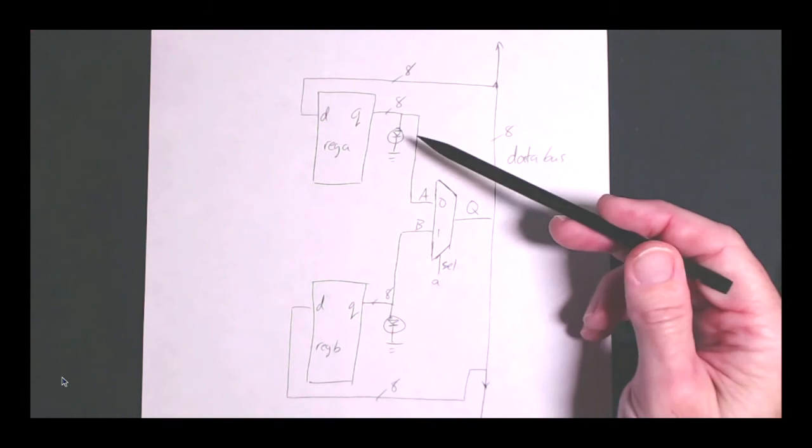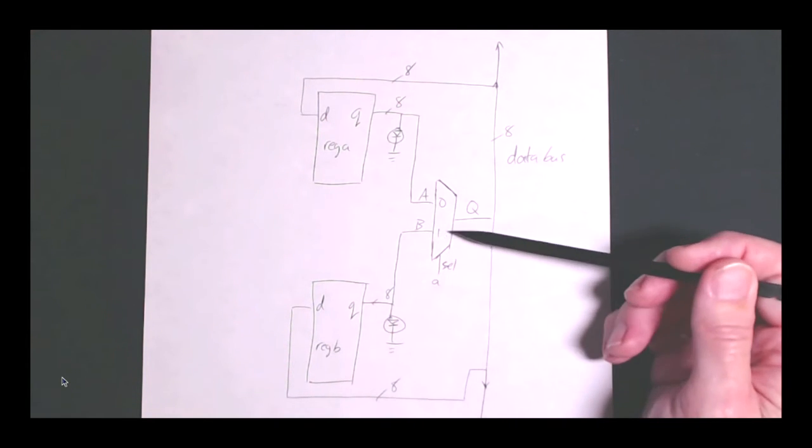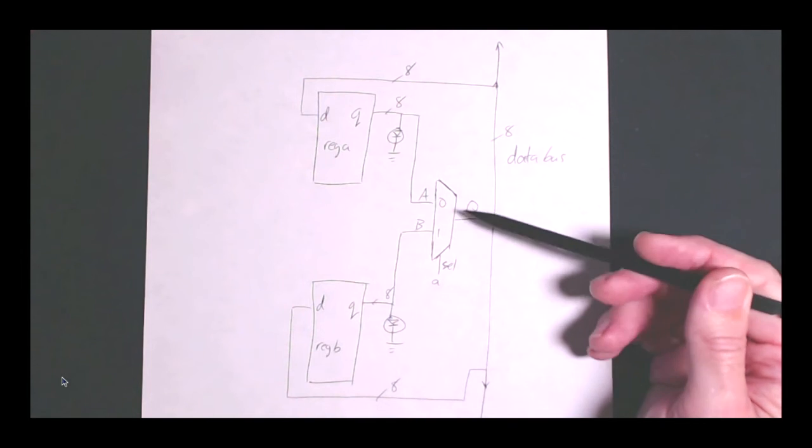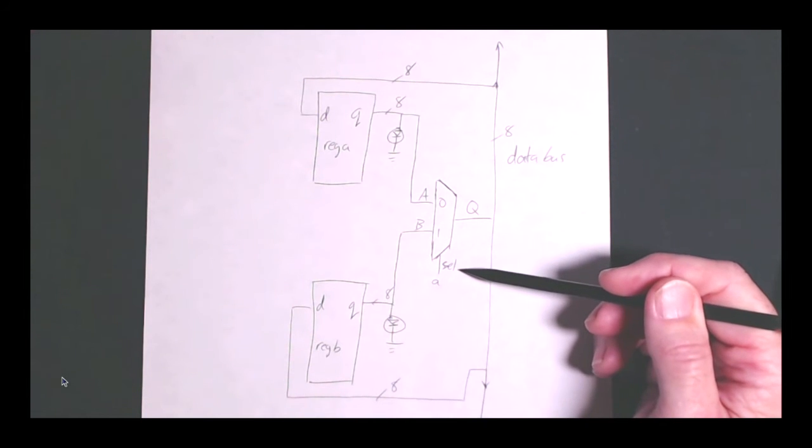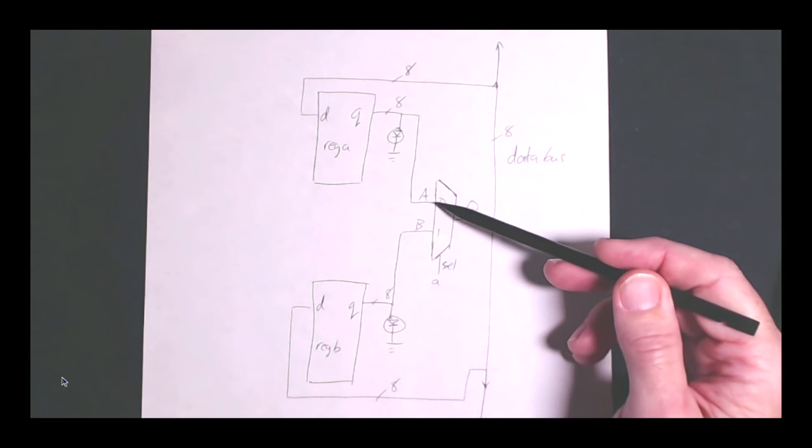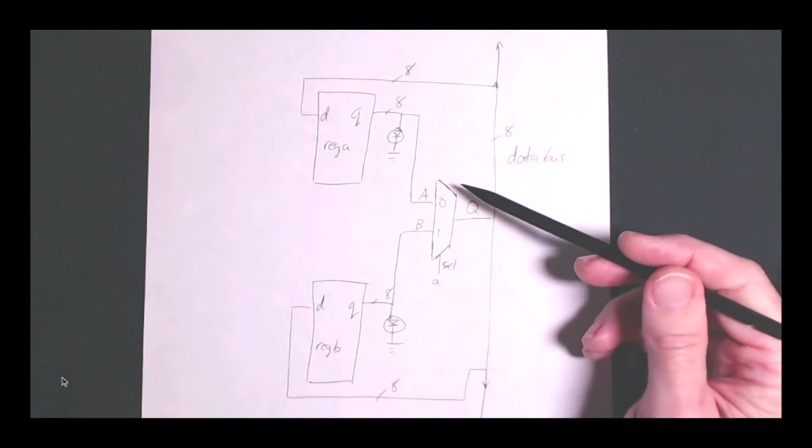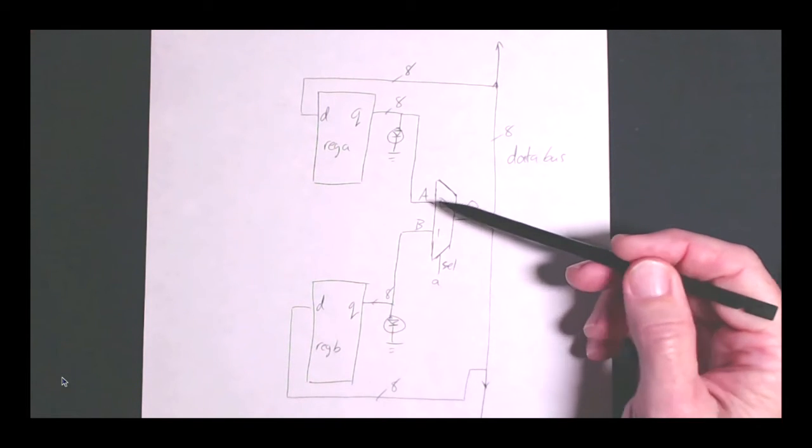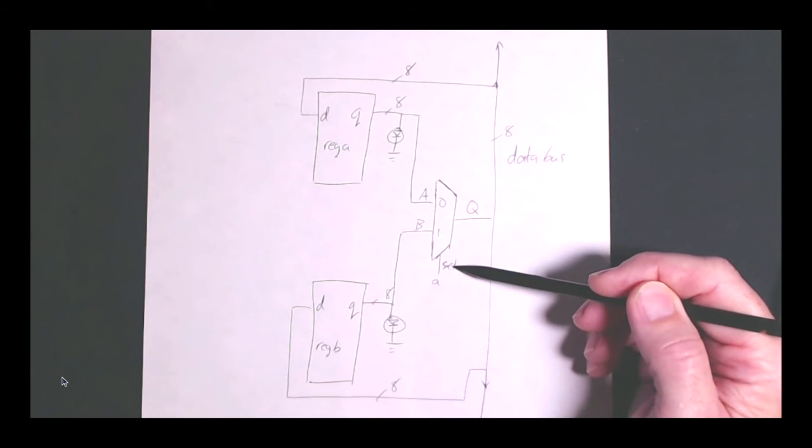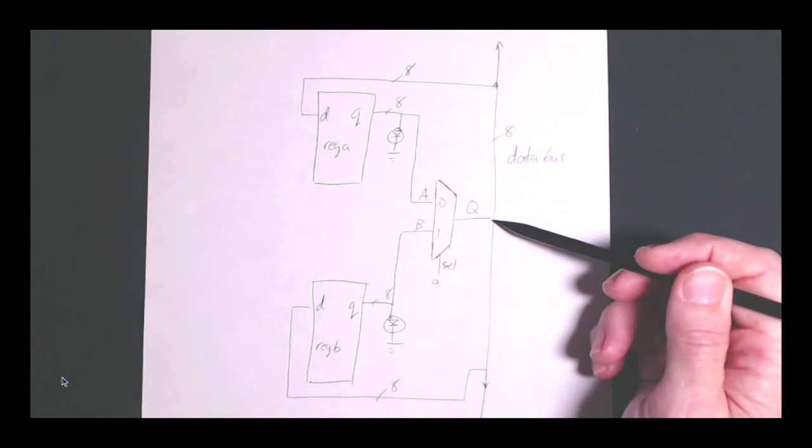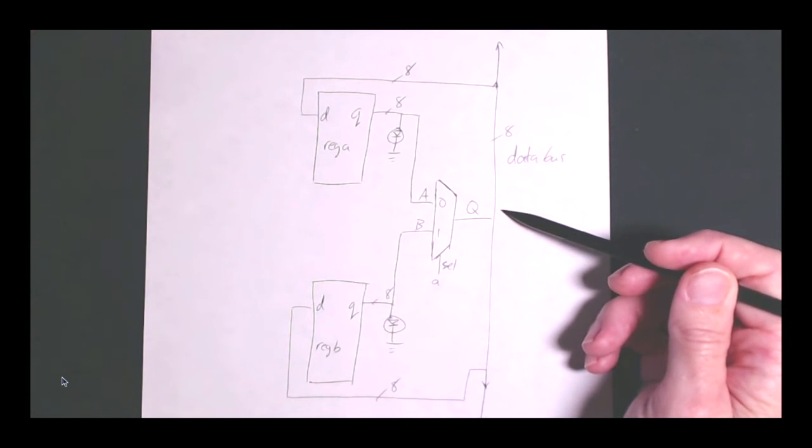And the way this works, you've got the output of each one of your registers going to an input of the multiplexer, and then you have a select line that tells the multiplexer which output to put through to Q. So in this case for register A, if the select line is zero, then register A's output gets asserted onto the data bus.